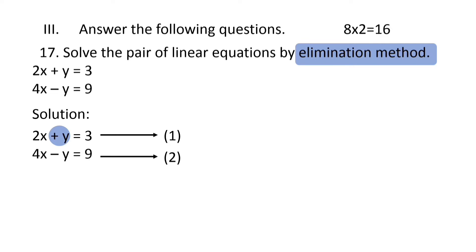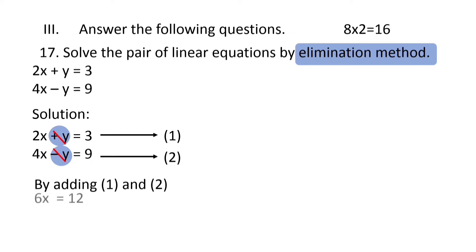Observe: plus y and minus y in equation 1 and 2. When they are added, they can readily get cancelled. So we have to add equation 1 and 2. y and y get cancelled. 2x plus 4x is equal to 6x. 3 plus 9 is 12. 6x is equal to 12, so x is equal to 12 by 6, that is equal to 2.